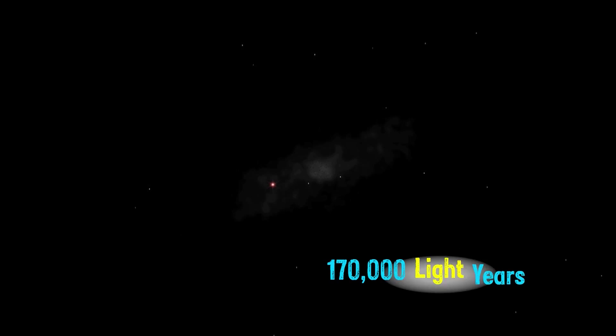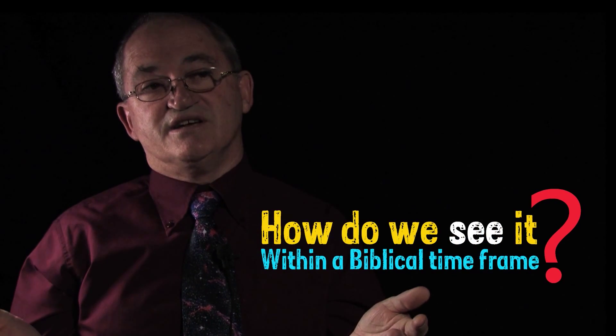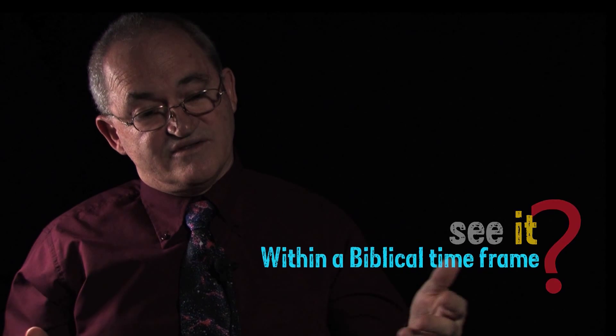In fact, the supernova is labeled 1987A. You see, a star exploded in a nearby galaxy. It's a small galaxy called the Large Magellanic Cloud, 170,000 light years away. So on the surface, it looks like that light should take 170,000 years to get here. How do we see it within a biblical time frame if the universe has only been around for 6,000 years?